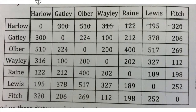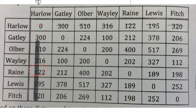Now we look down this column. What is the smallest number in that column? 122. So we're going to turn that one on — because the 122 above it is crossed out, it's this one here. So we've joined Harlow to Reign, those two towns together.